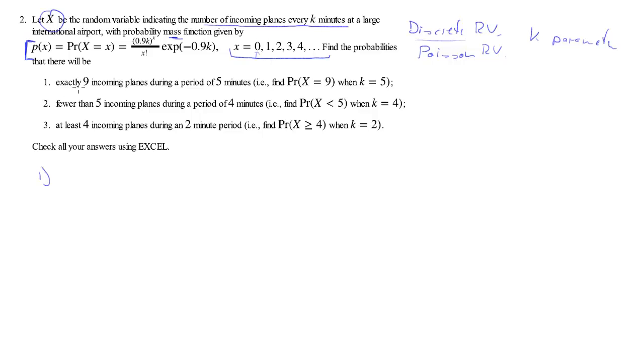Let's address the first question. What's the probability that exactly nine planes arrive during a five minute period? Basically we're saying k equals 5 and we want to calculate the probability that x equals 9. From here onwards we just plug in values into our mass function. That's 0.9 times 5 to the power of 9 divided by 9 factorial times the exponential of negative 0.9 times 5. It turns out 0.9 times 5 is 4.5.